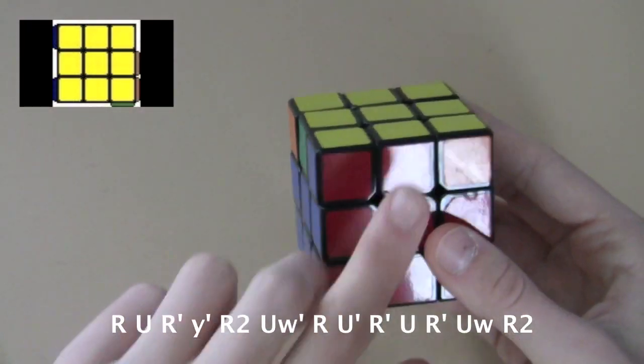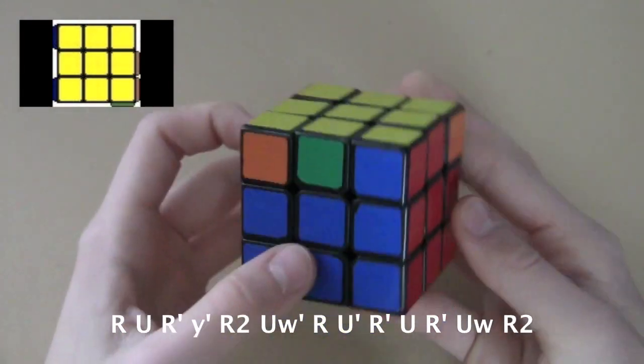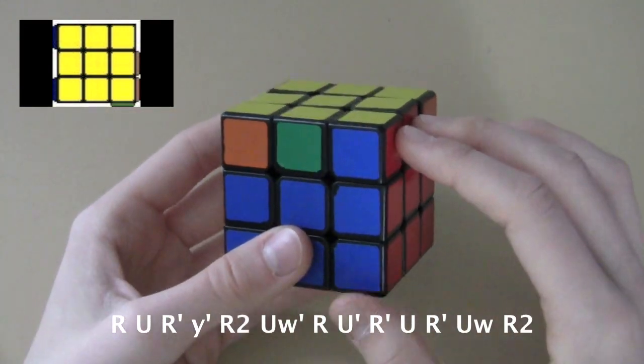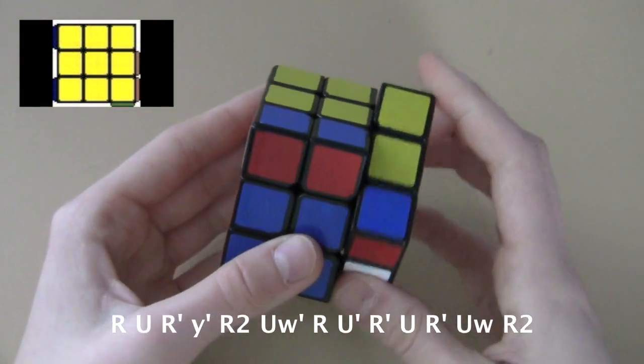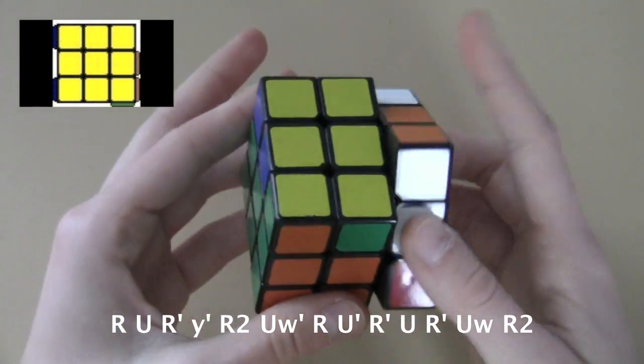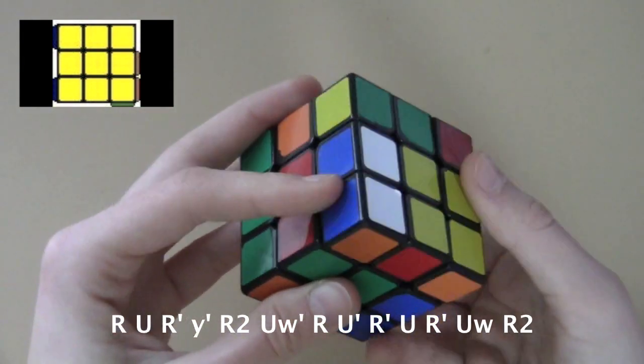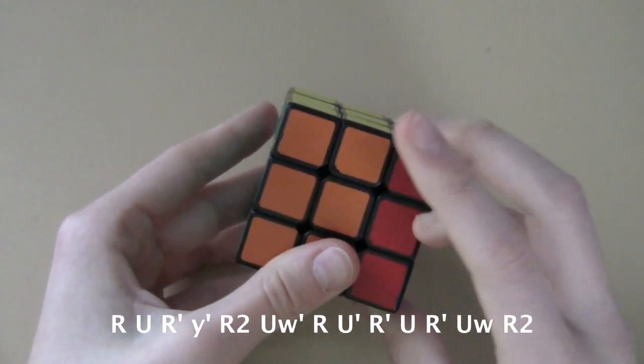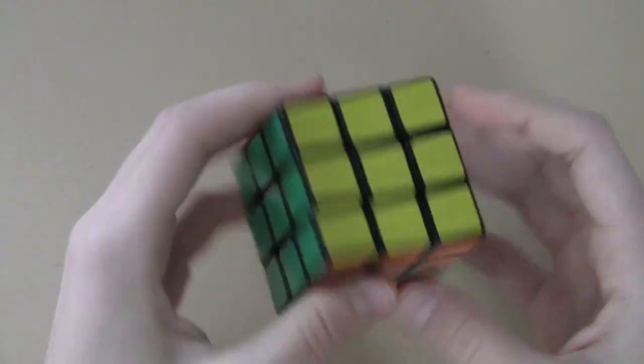Lastly, the GA perm. You will notice that the bar is in the front, but you hold it so that it's at the right. And it's the only algorithm that requires a R U R prime trigger and then a rotation.